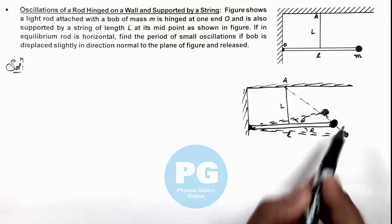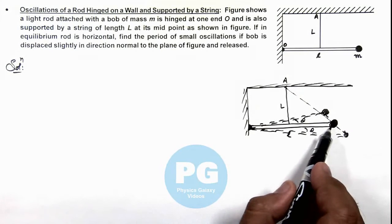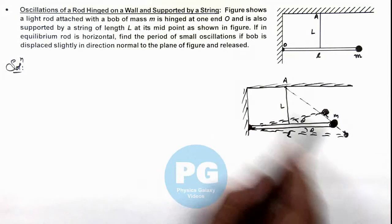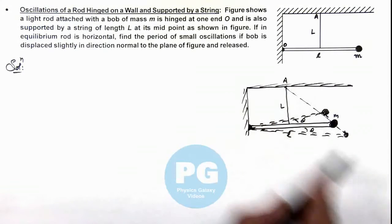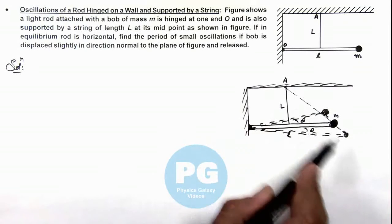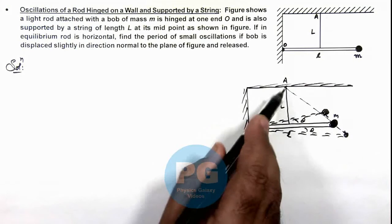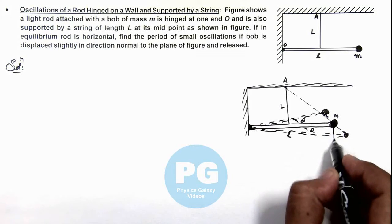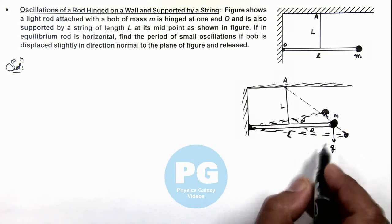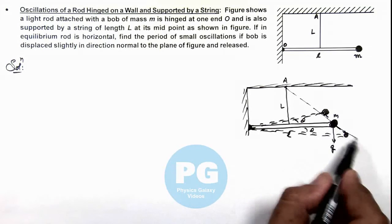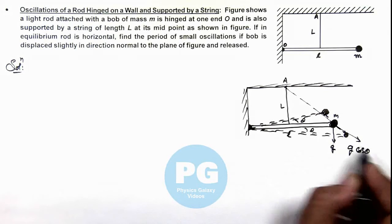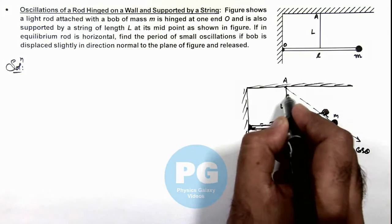We can see if we consider this line from A to mass m as a string, then you can imagine this would be an oscillation like a simple pendulum with suspension point A and the string connected in an inclined fashion. If we consider g is acting on it in downward direction along this line, the value of g would be g cos θ, where theta is this angle.